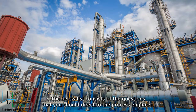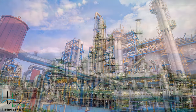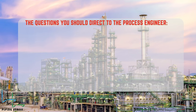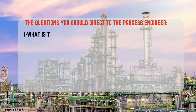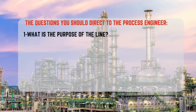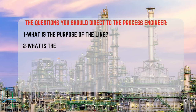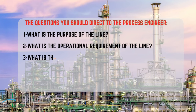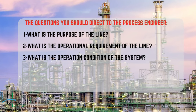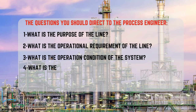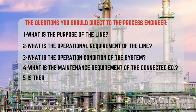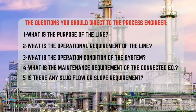The following list consists of the questions you should direct to the process engineer: 1. What is the purpose of the line? 2. What is the operational requirement of the line? 3. What is the operation condition of the system? 4. What is the maintenance requirement of the connected equipment? 5. Is there any slug flow or slope requirement?